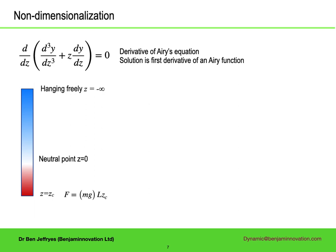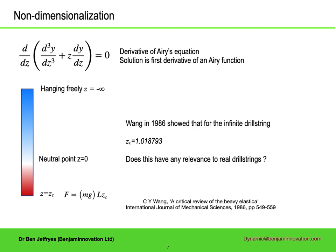Solving an equation means finding a solution subject to boundary conditions, and we are going to take the drill string as infinitely long. Up at infinity it is hanging freely, which means a pivoting end condition, and then there is a pivoting end condition at a distance zc below the neutral point, where z is a coordinate scaled by the normalization distance L. Wang in 1986 showed that for this infinite drill string zc was just over 1, so problem solved.